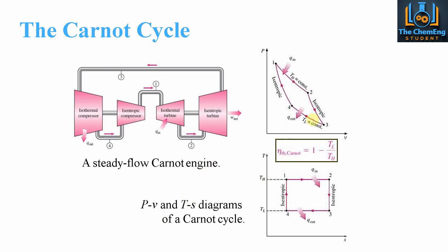If we compare the streams on the TS diagram: from point one to point two, we have Q coming into the system in the isothermal turbine — constant temperature but increasing entropy. From point two to point three, we go through the isentropic turbine, which gives out our net work — constant entropy but decreasing temperature. From three to four, we decrease entropy at constant temperature, giving out our heat, and then the cycle regenerates itself.